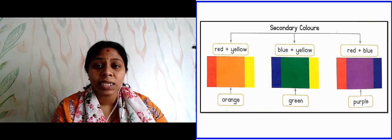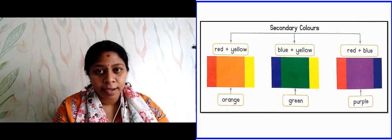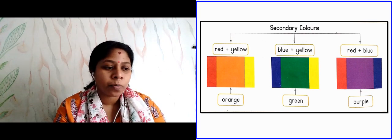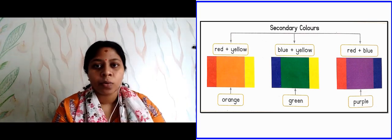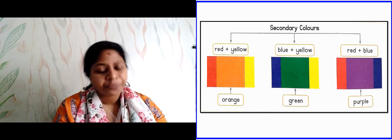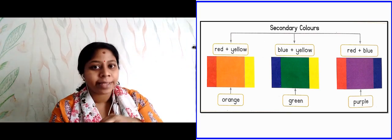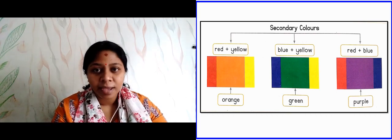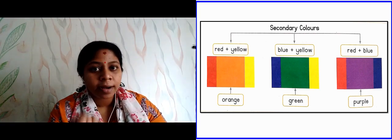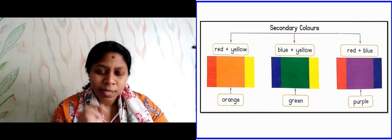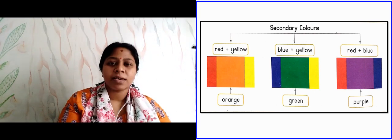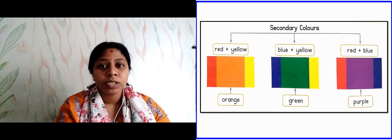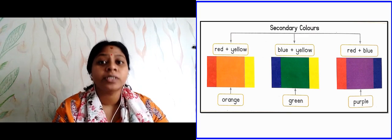In the next slide you can see that it's written secondary colors. And what is this secondary color? I will tell you. Now, for example, you have seen the first side, the first one is red and yellow. Red and yellow are primary colors. This red and yellow mix, we'll get a color. We'll get red and yellow, we'll get orange color.